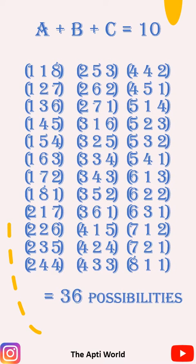So, there are 36 possibilities. Don't you think this method is too long? Let's see it in a simpler way.